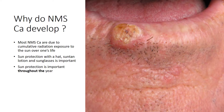Most non-melanoma skin cancers are due to cumulative radiation exposure from the sun over one's lifetime. Sun protection with a hat, sun tan lotion, and sunglasses is an important way to reduce exposure to radiation. Sun protection is important throughout the year. Even on a rainy day, 70% of the radiation from the sun still comes through the clouds. This lesion here is a squamous cell cancer on the lower lip. This is something that we treat in our office.